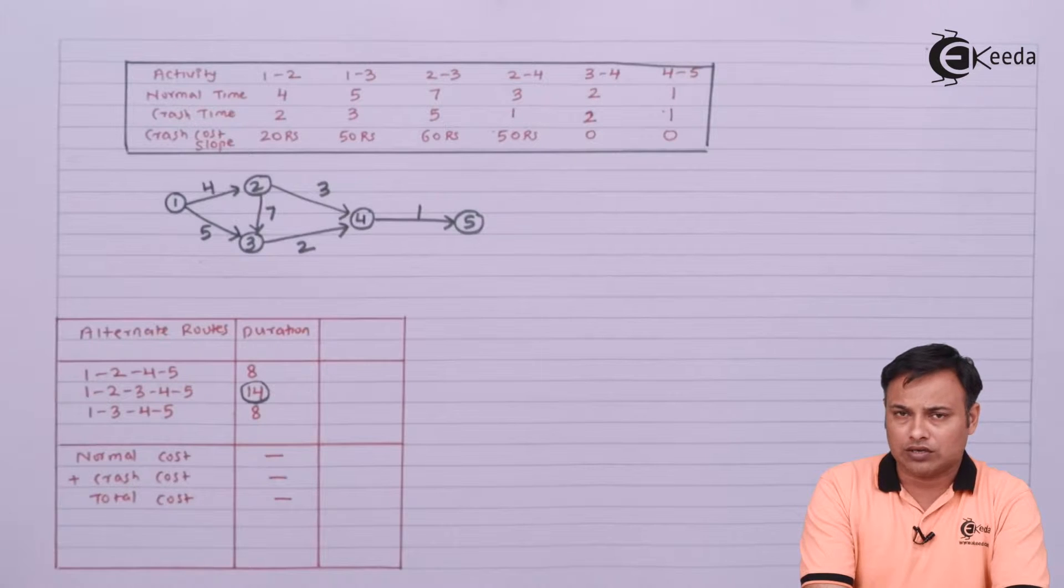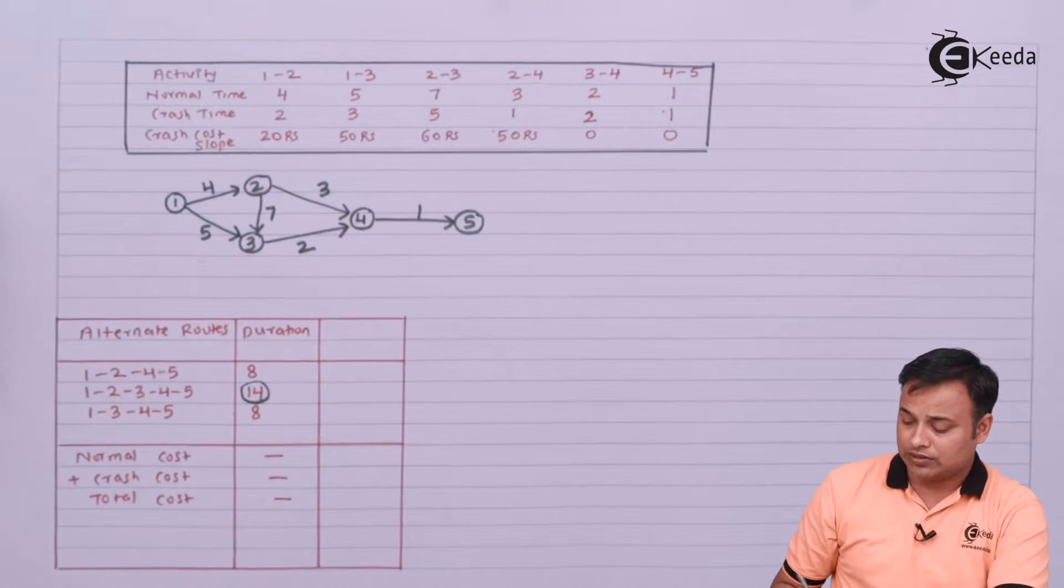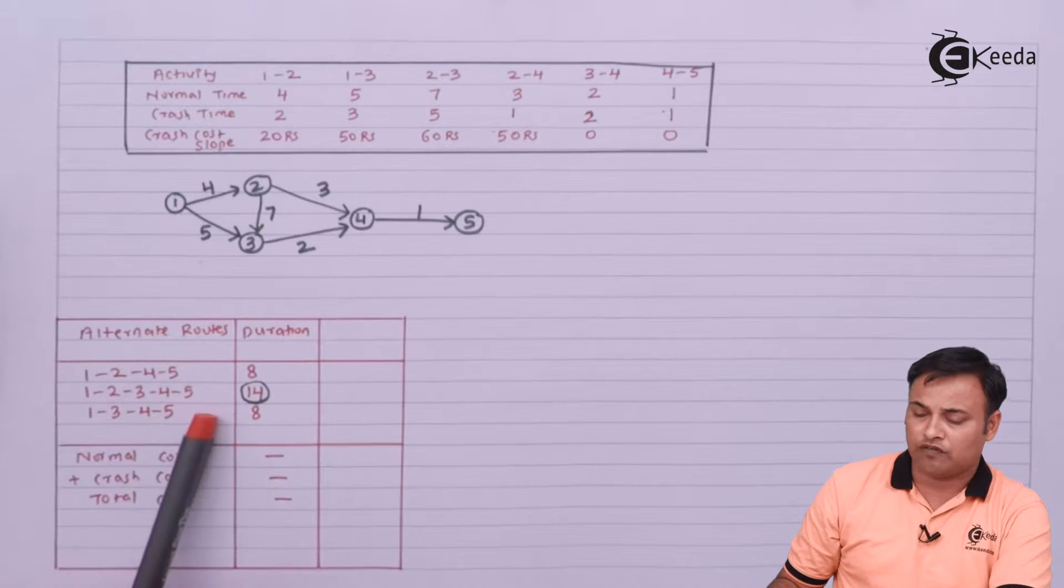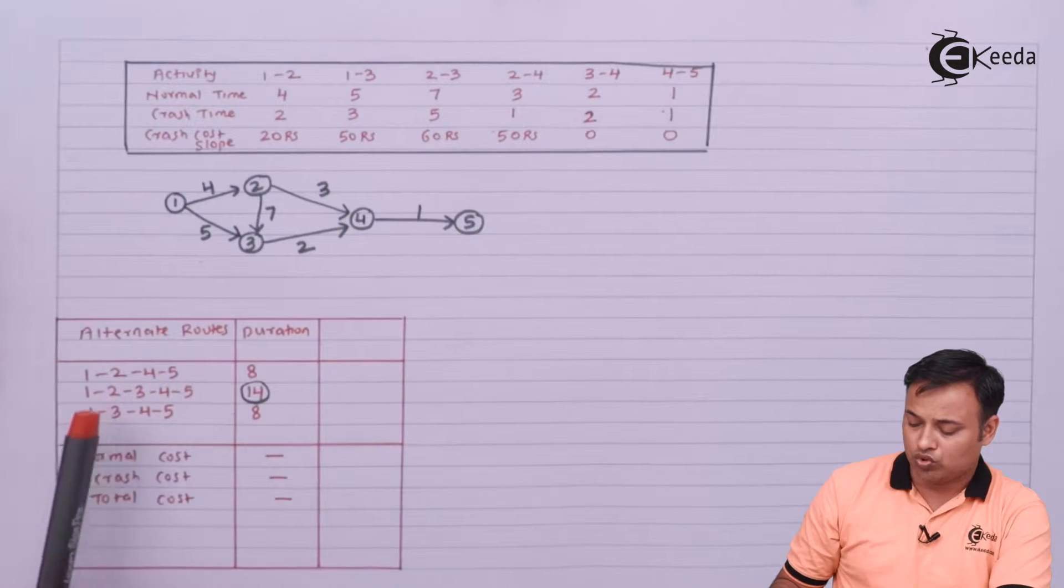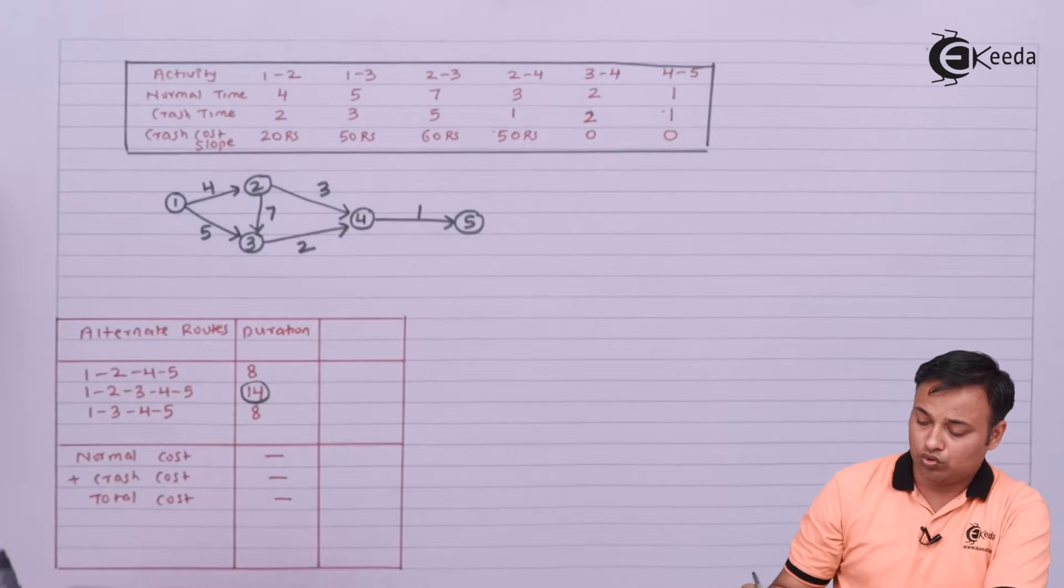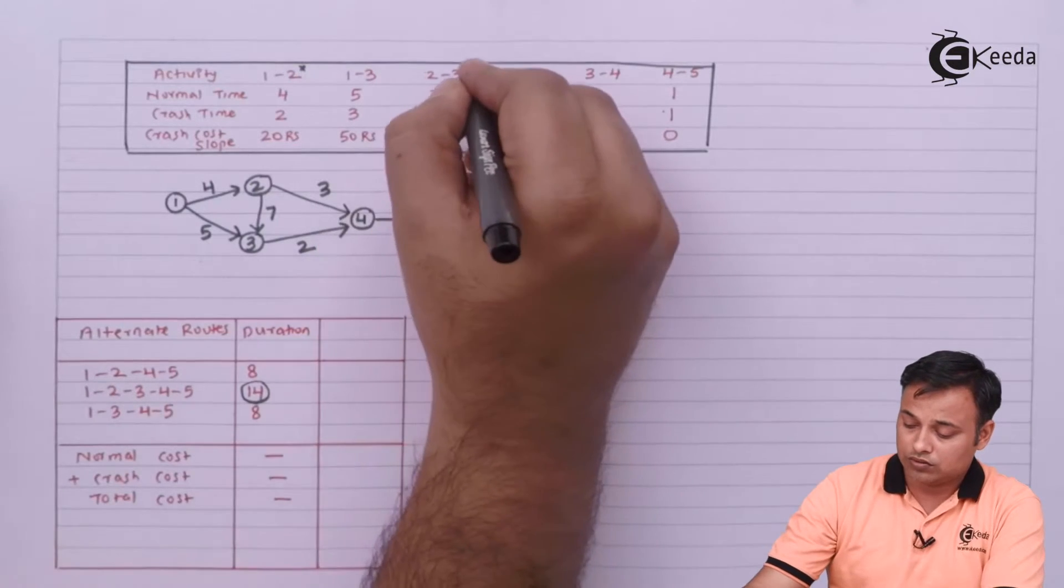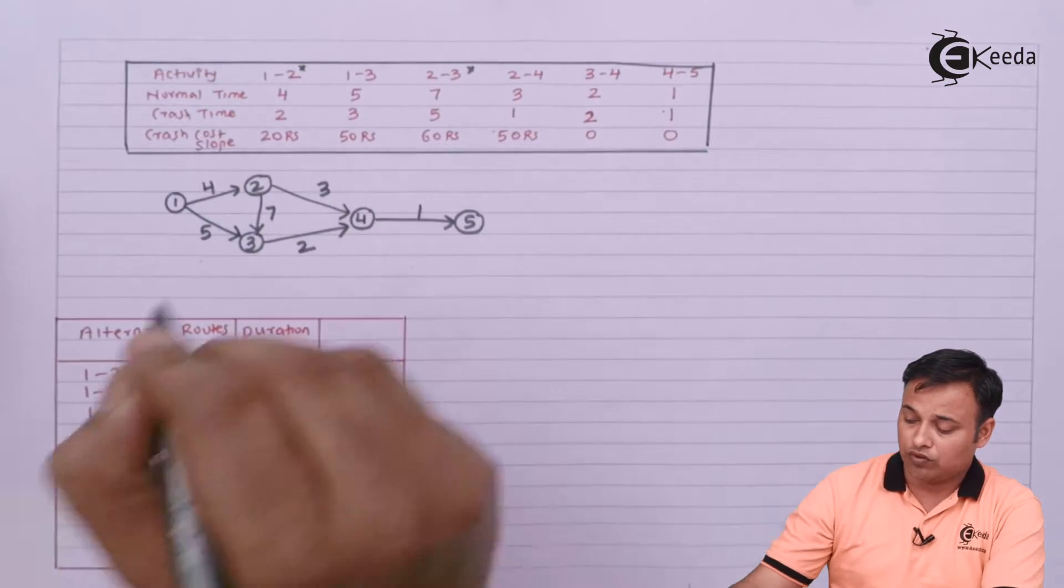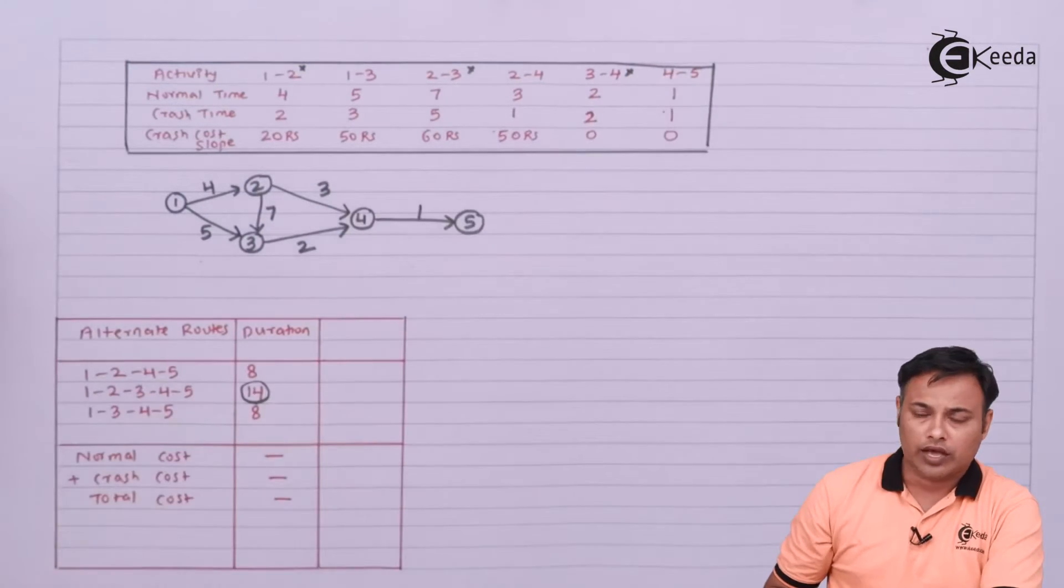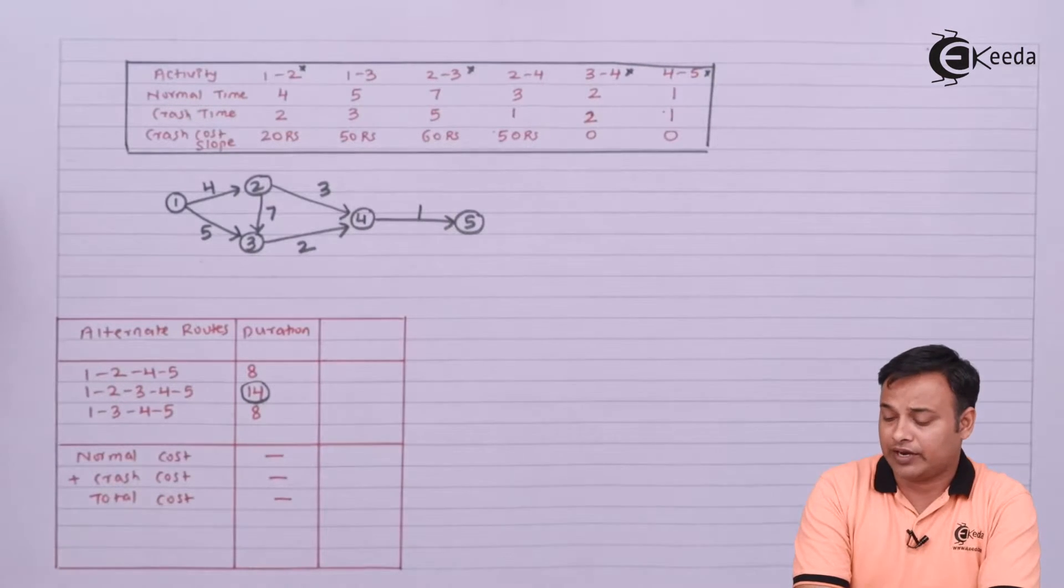Now let's work out the crashing. My critical path is 1-2-3-4-5. So we have 1-2, then 2-3, then 3-4, and 4-5. So we have got 4 critical activities.